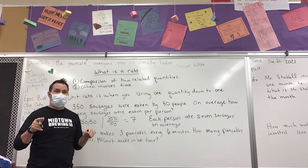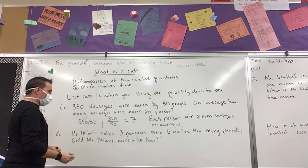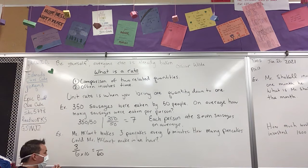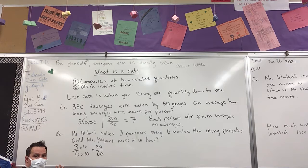I like it, Keegan. He's going to say find how many minutes are in an hour first. So Keegan did it like this — he said, okay, Mr. McCourt made three pancakes in six minutes. I know that six minutes times ten equals sixty minutes. And since you did that to the bottom of the unit, you also multiply the top, so three times ten equals thirty. You'd say I'd make thirty pancakes in sixty minutes.